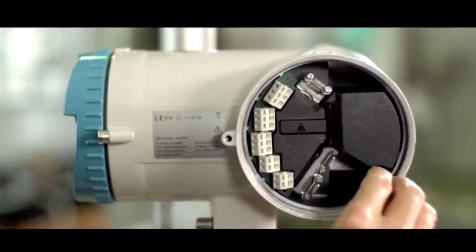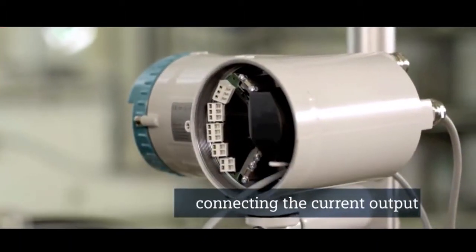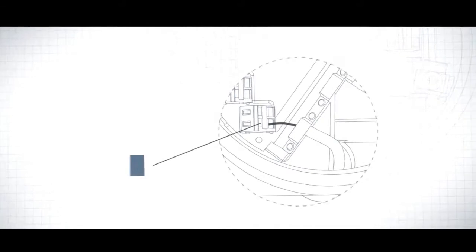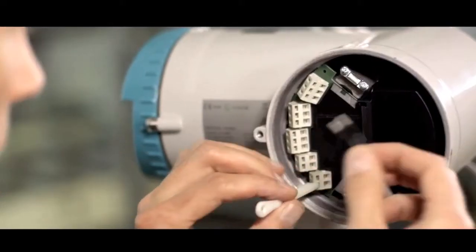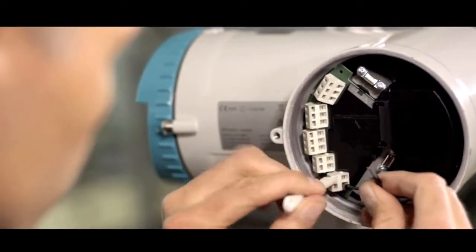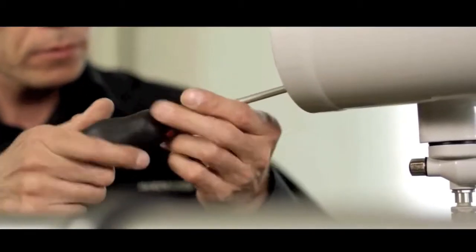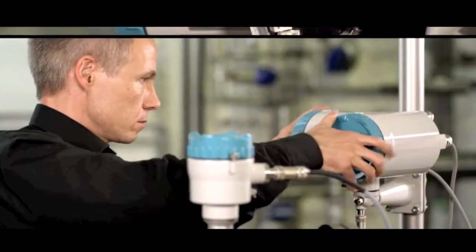To make the HART connection, the cable is pushed through the appropriate cable path. Prepare the cable. The diagram in the cover shows the correct connection here as well. Make the connection with the wiring tool and fasten the cable to the terminal plate. Then replace the cover.